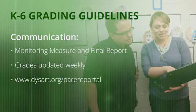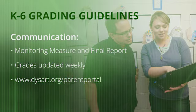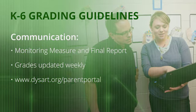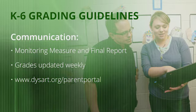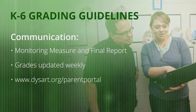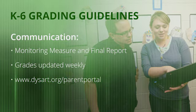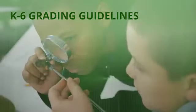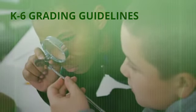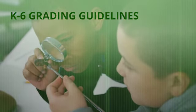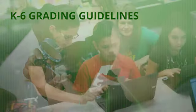An important component of the grading system is communication to parents concerning the academic progress of students, both as a monitoring measure throughout the school year as well as a final report card. Parents are informed regularly as to their students' progress not less than four times per year and when their students' performance becomes a cause for concern. Additionally, grades are updated weekly within our online grading system. The use of consistent K-6 grading guidelines provides students with opportunities to master content and demonstrate proficiency.